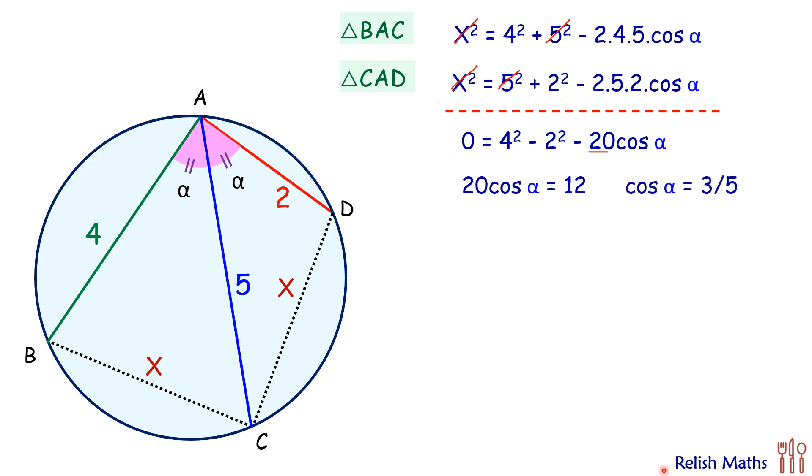So cos α is 3/5. In fact, we'll be using sin α in another formula, so here we'll use the identity to find the value of sin α as 4/5. Now we have got the value of cos α and sin α. To get the value of x, we'll use this first equation. Here we'll replace cos α by 3/5. Now solving it, we'll get value of x² as 17, or value of x is √17.